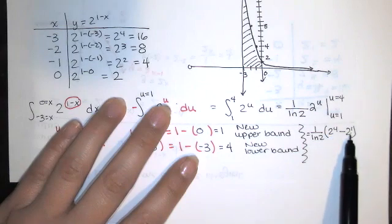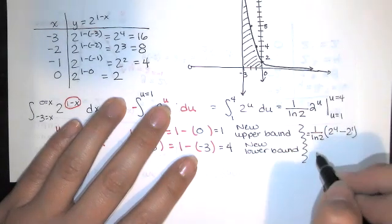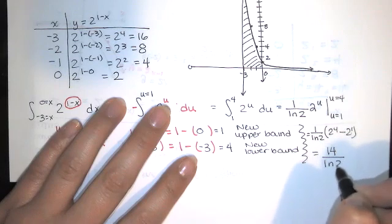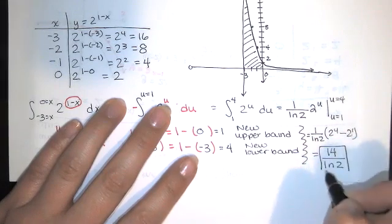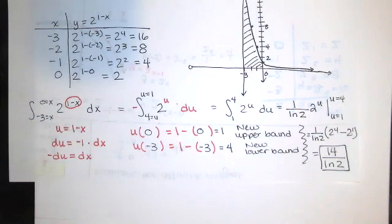That's 16 minus 2 is 14. And so we end up with 14 over ln(2). And that's our answer.